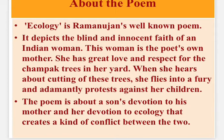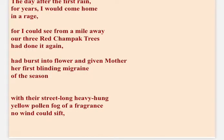Now we will read the text of the poem. The poem begins: 'The day after the first rain for years I would come home in a rage, For I could see from a mile away Or three red champak trees had done it again, Had burst into flower, And given mother her first blinding migraine of the season, With their street-long heavy hung Yellow pollen fog of a fragrance No wind could shift.'